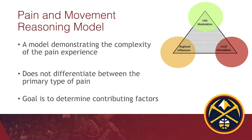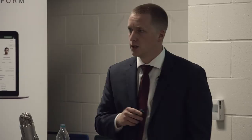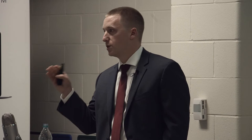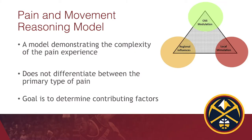The next piece is the pain and movement reasoning model, out of Australia from Jones et al. This model is great for pro sports, elite athletes, and military. Rather than differentiating peripheral nerve pain from nociceptive pain, it asks: pain occurs — what are the contributing factors that create load or stimulus to the nervous system? There are three major factors: CNS modulation, regional influences, and local stimulation.